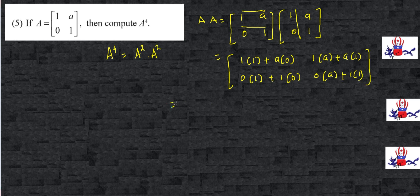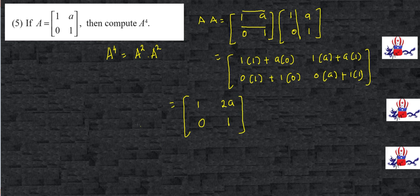So this is going to be 1. Of course, the other element is going to be 0. You also have a 0 here, and then you get 2a, and then a 1. So this is going to be my A squared: [[1, 2a], [0, 1]].